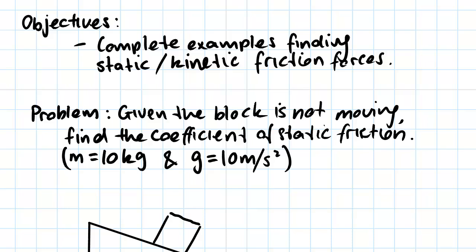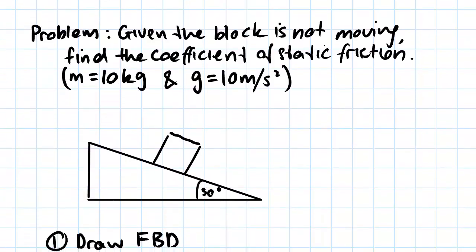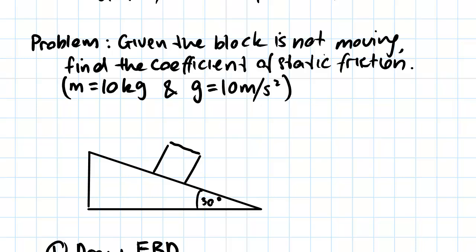So our first problem that we're going to be looking at is one involving static friction. We have this problem here - we've been given that the block is not moving, so we have a block on a slope of 30 degrees. Given that the block is not moving, let's find the coefficient of static friction.